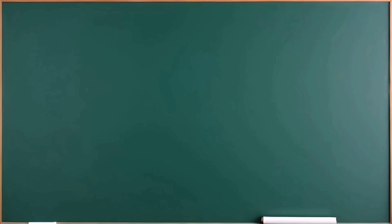Before we start anything, let's think about how we can solve this question. Here we have the product of x squared and sin inverse x. We can use the integration by parts method. We know the integral of x squared, but we don't have a direct equation for the integral of sin inverse x, so we can prioritize the x squared term.